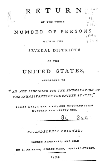Census data included the name of the head of the family and categorized inhabitants as: free white males at least 16 years of age, free white males under 16, free white females, all other free persons reported by sex and color, and slaves. Thomas Jefferson, then the Secretary of State, directed Marshals to collect data from all 13 states. The census was not conducted in Vermont until 1791, after that state's admission to the Union as the 14th state on March 4 of that year.